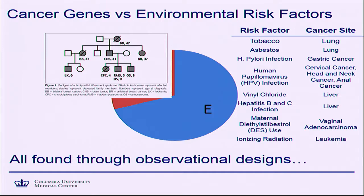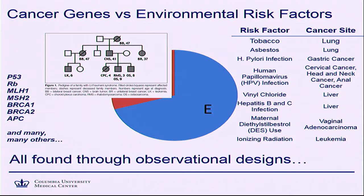Just as important and sometimes overlooked is that observational studies are the main study design used to find all of the causal genes for cancer, which obviously are a much longer list growing every day. Nobody would dispute that any of these major genes are not causal in cancer. So we have used observational designs to find many, if not all, of the causes now for cancer.